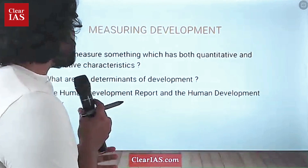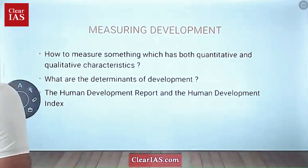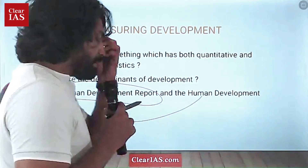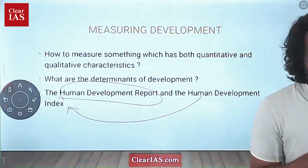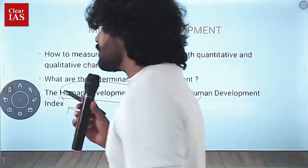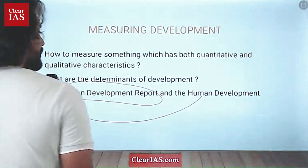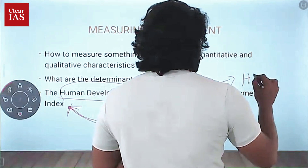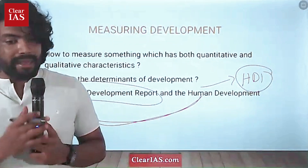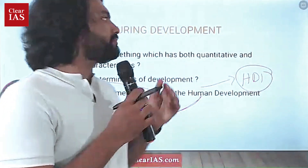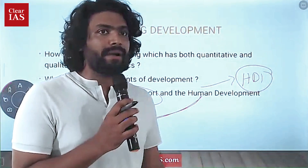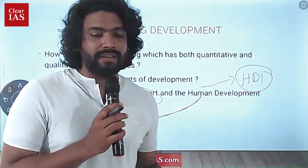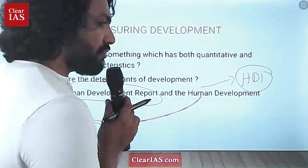The first and most important attempt was the Human Development Report and the Human Development Index — still a very relevant thing on how to measure development. This was actually the Human Development Index, HDI — very, very important. UPSC can directly ask questions regarding HDI for mains as well as prelims. The latest Human Development Report will be coming next week around March 14-15. Please watch out for that in current affairs.